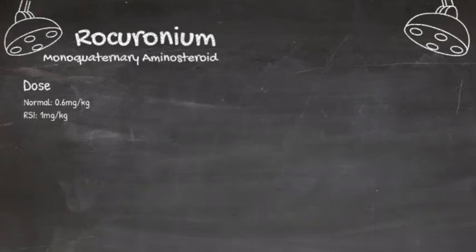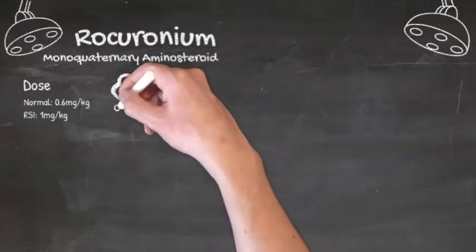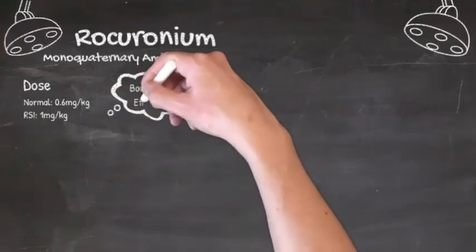So why does the higher dose speed its onset? Well, it's because rocuronium's potency is relatively low, so when you give a high dose it creates a huge concentration gradient between the neuromuscular junction and plasma, which makes the onset twice as fast. We call this the Bowman effect.